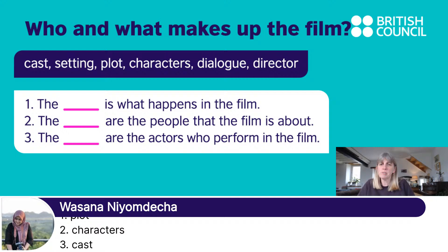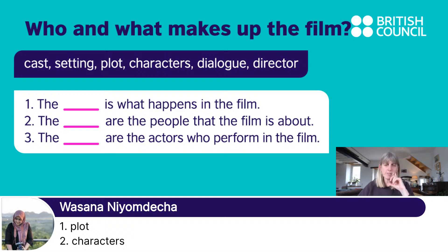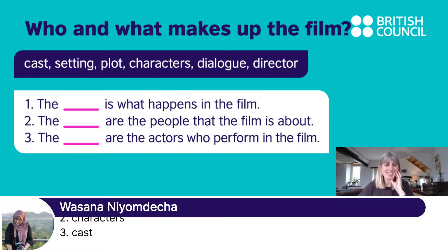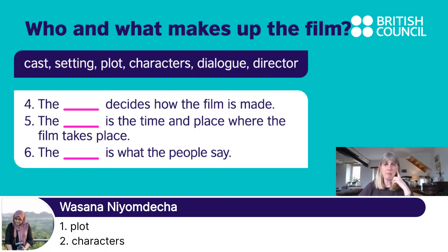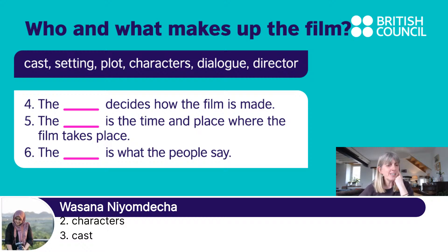Number three is the cast — the actors. So the characters are the fictional people in the story; thinking of Friends, the characters are Rachel and Ross, etc., and the real people who act those roles are the cast. Number four: the blank decides how the film is made. Number five: the blank is the time and place where the film takes place. Number six: the blank is what the people say.